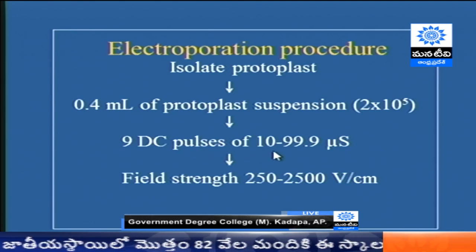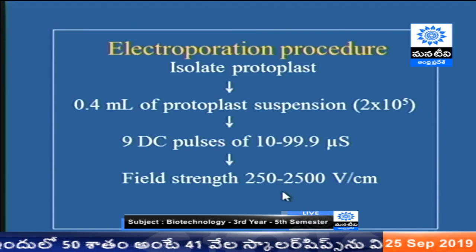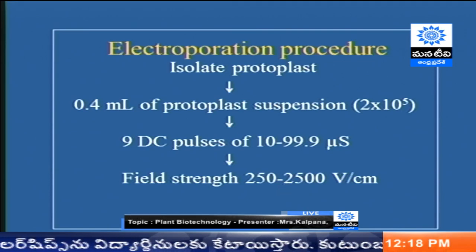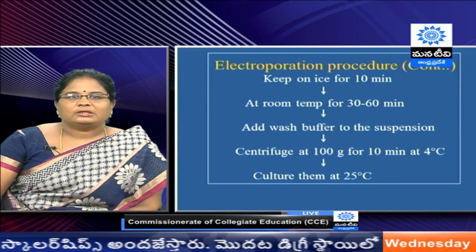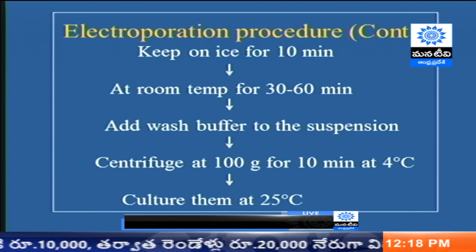The pulse duration ranges from 10 microseconds to less than 100 microseconds, and the field strength is around 250 to 2500 volts per centimeter — comparatively very high voltage, but for a very short duration. This allows us to alter the permeability of the cell membrane. Once we give the electric pulse, the buffer containing protoplasts and the gene-of-interest plasmids must immediately be kept on ice for at least 10 minutes, keeping the pores open to increase the chances of plasmids entering the cell.